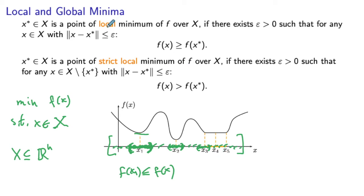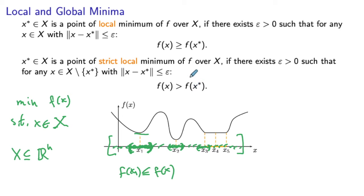Similarly, we can define local maximality and strict local maximality by reversing the signs in these inequalities. For a local maximum, we would have f of x less than or equal to f of x star, meaning x star has the largest objective in some small neighborhood. For a strict local maximum, we would have f of x strictly less than f of x star for any x other than x star in the neighborhood, meaning x star has the strictly largest objective in that small neighborhood.